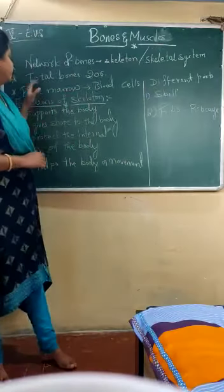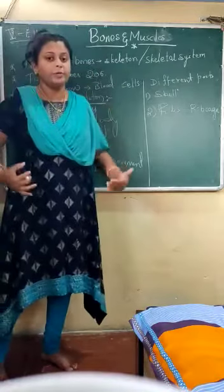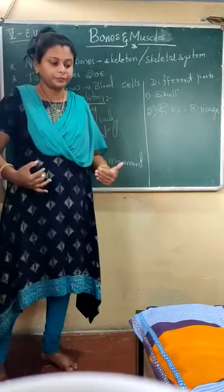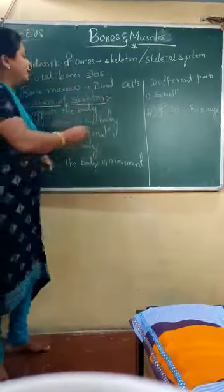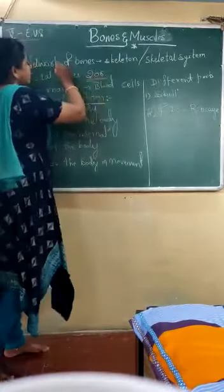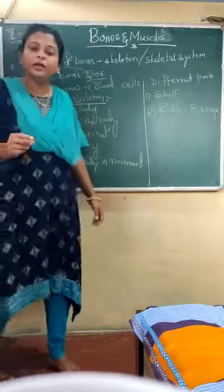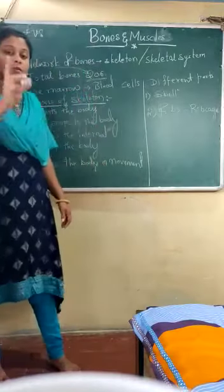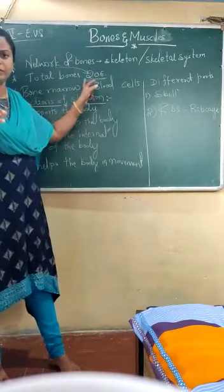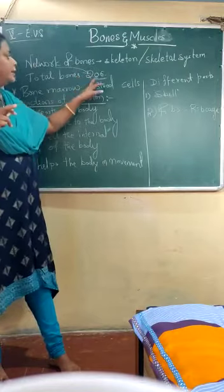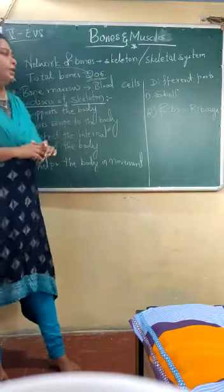In the human body there are 206 bones. So the number of bones in the network of the skeleton is 206. That is 206 total bones.